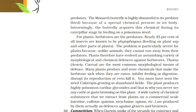For plants, herbivores are the predators. Nearly 25% of all insects are known to be phytophagous — feeding on plant saps and other parts of plants. The problem is particularly severe for plants because unlike animals, they cannot run away from their predators. Plants therefore have evolved an astonishing variety of morphological and chemical defenses against herbivores. Thorns in Acacia and cactus are the most common morphological means of defense. Many plants produce and store chemicals that make herbivores sick when eaten. The weed Calotropis growing in abandoned fields produces highly poisonous cardiac glycosides, and that is why you never see any cattle or goats browsing on this plant. A wide variety of chemical substances extracted from plants commercially — nicotine, caffeine, quinine, strychnine, opium, etc. — are produced by them actually as defense against grazers and browsers.